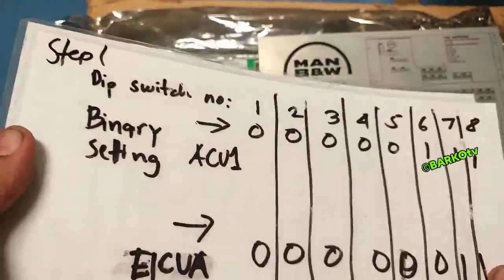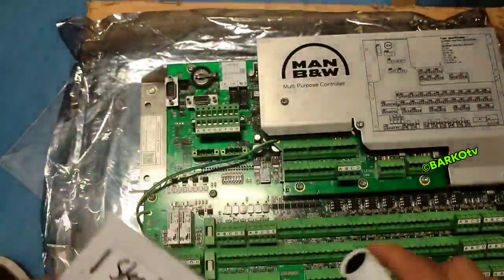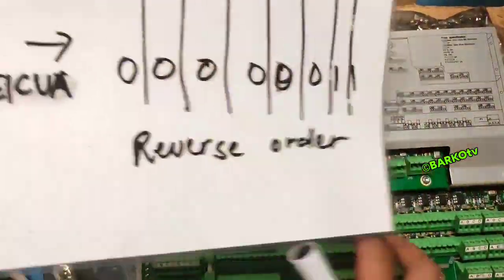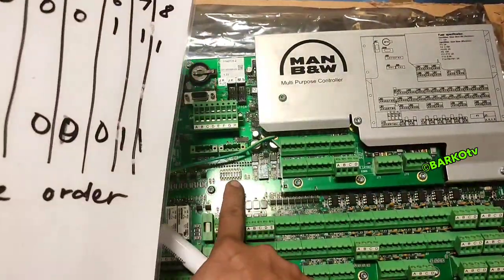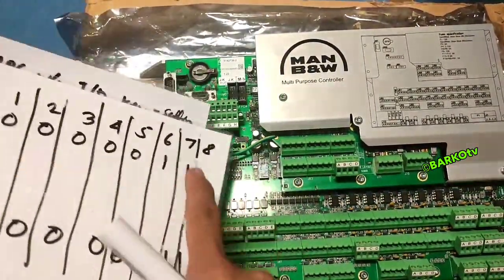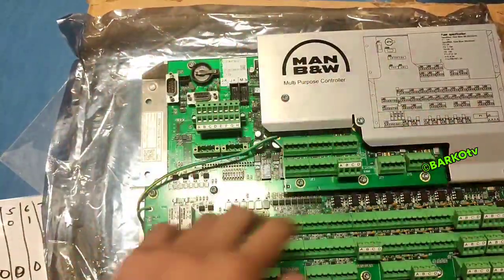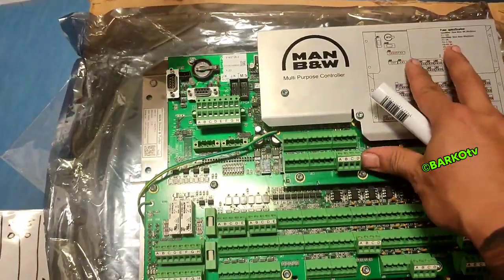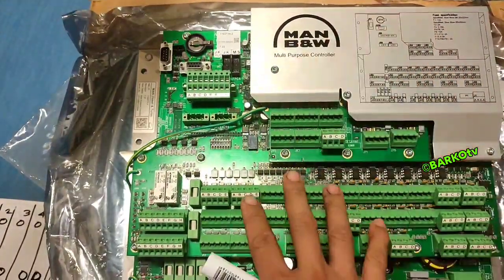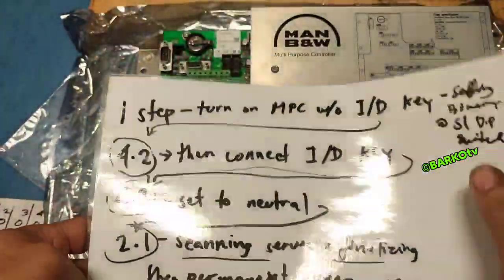After step one, you install this on AC1. This is the setting: one one. Then turn on the MPC.